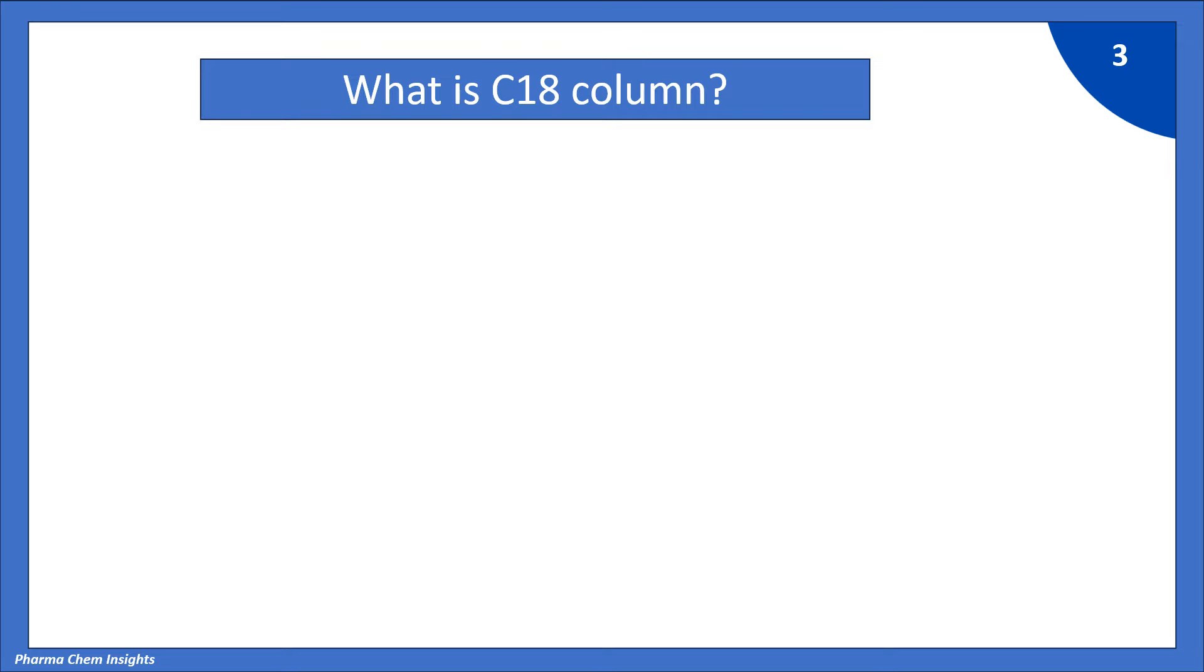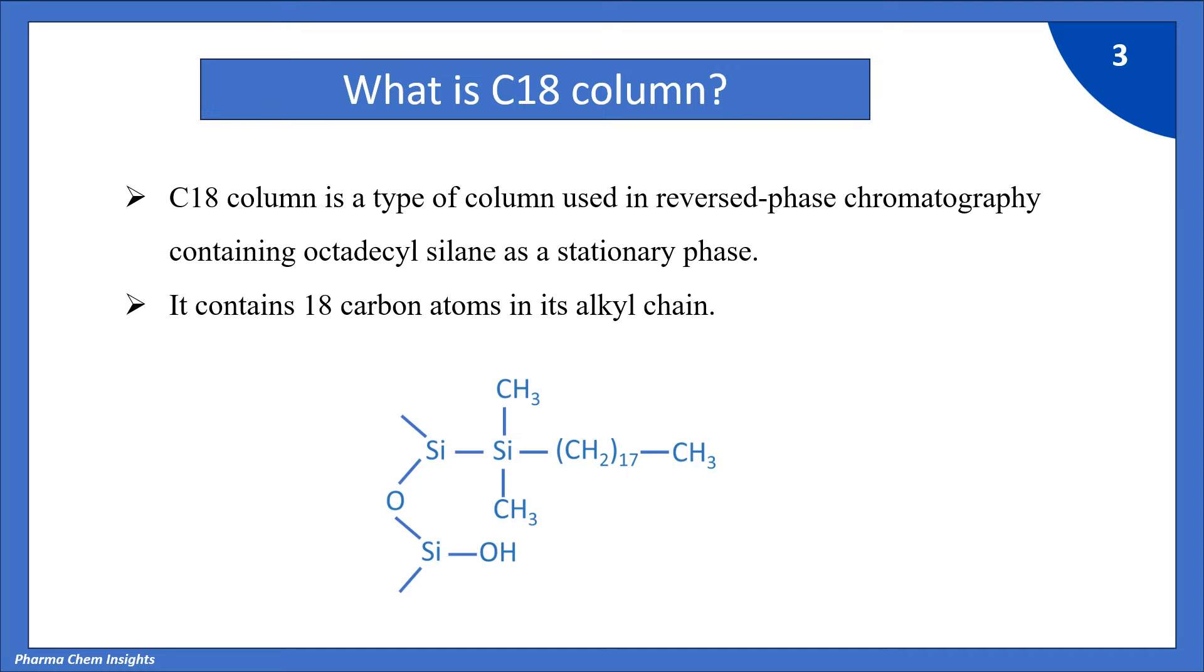What is C18 column? C18 column is a type of column used in reverse phase chromatography containing octadecyl silane as a stationary phase. It contains 18 carbon atoms in its alkyl chain.